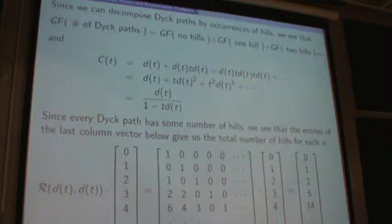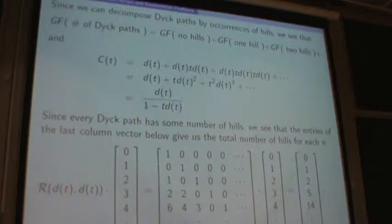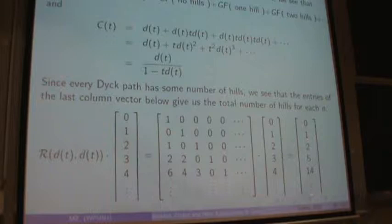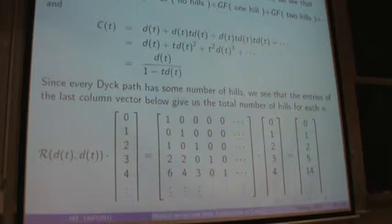Now, since every Dyck path has some number of peaks — zero, one, two, three and so on — multiplying this particular Riordan array by this particular sequence (representing zero peaks, one peak, two peaks, three peaks and so on), we obtain the total number of peaks among all Dyck paths. All I need now is to obtain the generating function for this by applying the fundamental theorem of Riordan arrays.